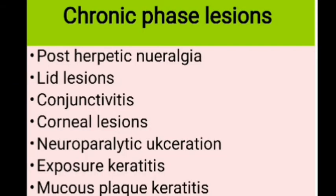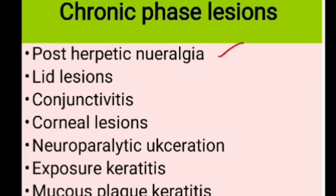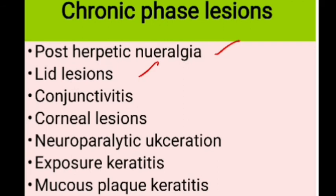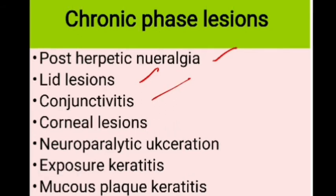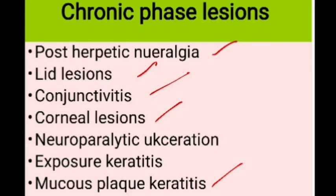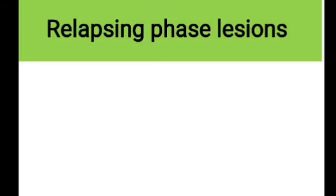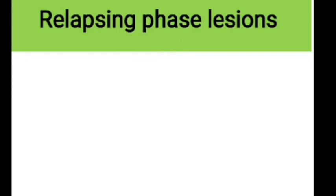In the chronic phase, patients can have post-herpetic neuralgia, lid lesions as sequelae of scarring leading to ptosis, trichiasis, entropion, and notching, and conjunctival lesions leading to chronic mucous-secreting conjunctivitis. Corneal lesions include neuroparalytic and exposure keratitis. Mucous plaque keratitis develops in five percent of cases between the third and fifth month, characterized by sudden elevated mucous plaques staining with rose bengal. In the relapsing phase, disease recurs after years, manifesting as nummular keratitis, mucous plaque keratitis, episcleritis, scleritis, or secondary glaucoma.